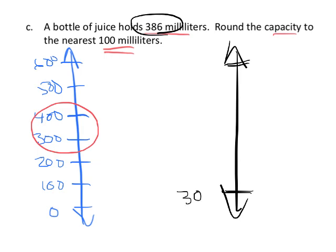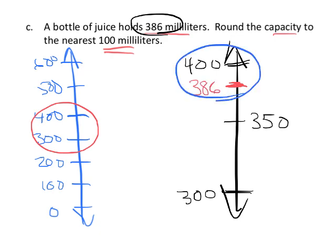So that means we're going to label the bottom tick mark at 300. We're going to label the top tick mark at 400. Smack dab in the middle is 350. And that means 386, we can estimate, it's close enough, 386 right around there. Which means it rounds up to 400. So the answer is 400 milliliters is the rounded answer.